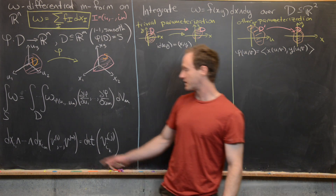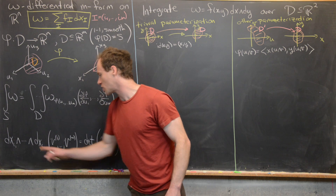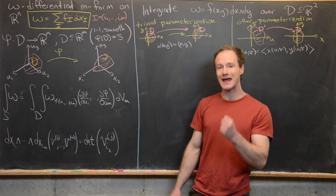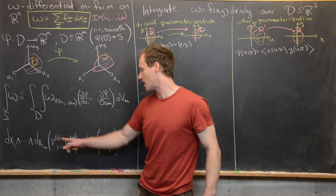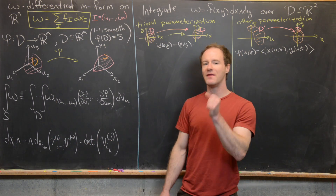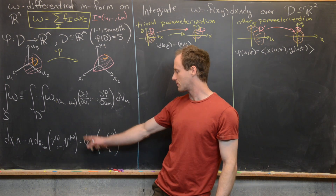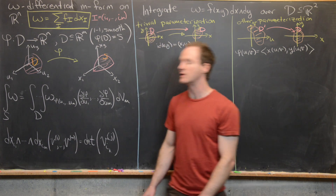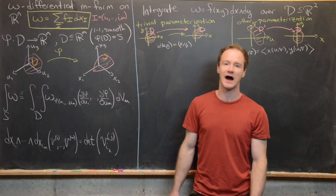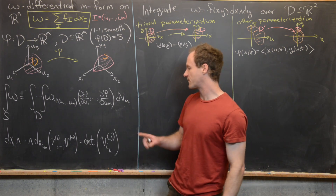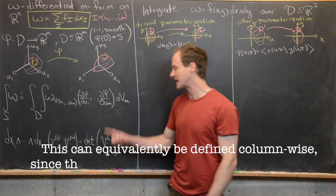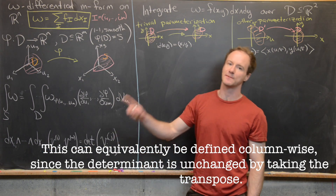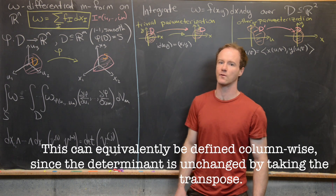We recall that the elementary M-form dX_{i1} wedge all the way up to dX_{iM} has an action on M different vectors from Rn — call them V^1 up to V^M — and gives an output that is the determinant formed by those vectors with their I_1 through I_M components. The first row is made up by the first vector with its I_1 up to I_M components, the second row is the second vector, and so on.